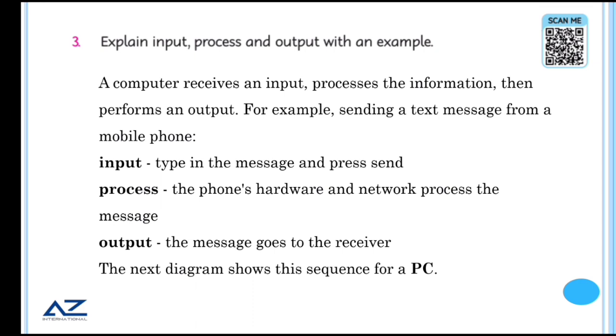Explain input, process and output with an example. A computer receives an input, process the information that performs an output. For example, I have to send text message to mobile phone. What is the input? I will type a message and press the process. What is the process? The phone has been checked, the network will be checked, the network will be connected, the signals will be sent, the message will be sent. The output is the message receiver will receive.